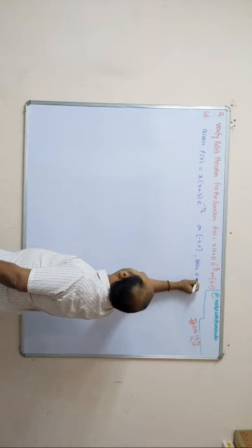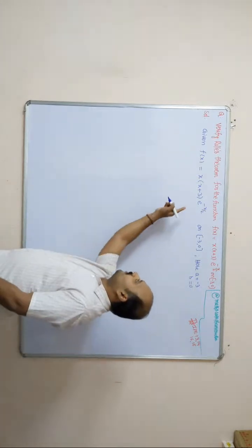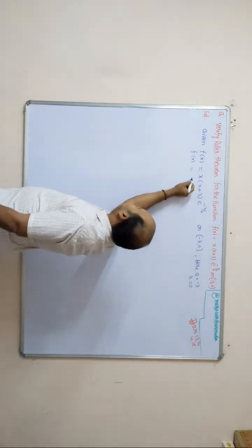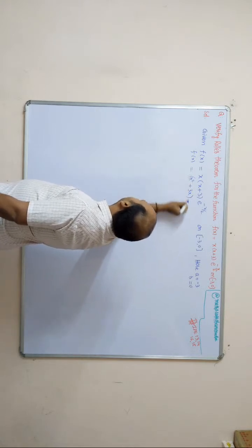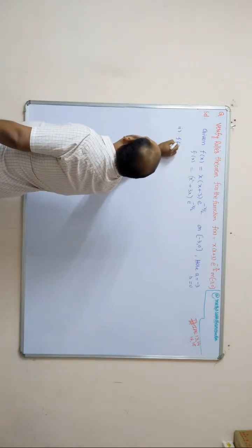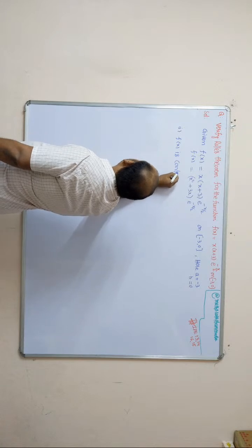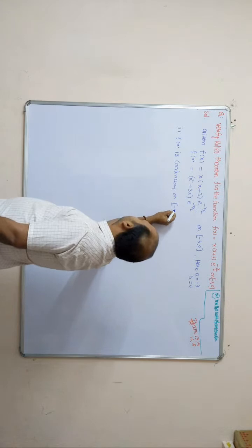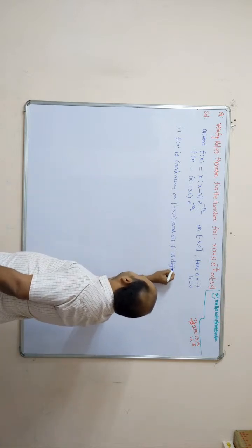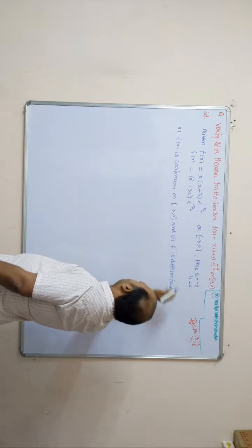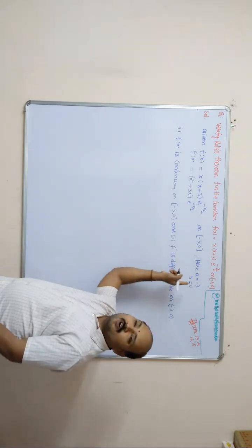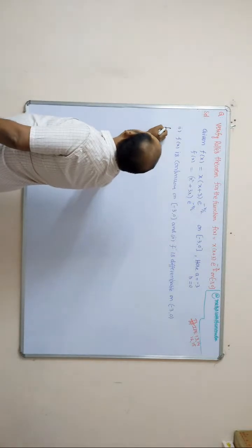Comparing with the closed interval [a, b], the values are a = −3 and b = 0. Since there are three functions in the product, for convenience in differentiation, we rewrite: f(x) = (x² + 3x)e^(−x/2). The first condition of Rolle's theorem is that f(x) is continuous on [−3, 0], and the second is that f is differentiable on the open interval (−3, 0).